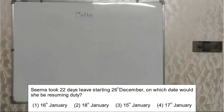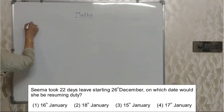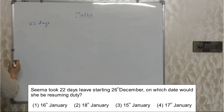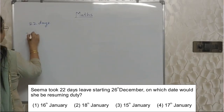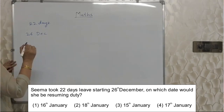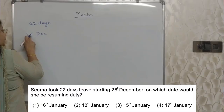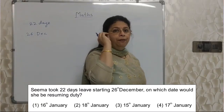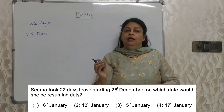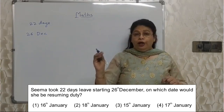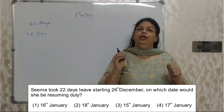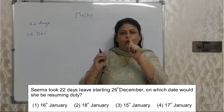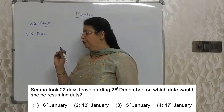Students, read the next sum properly. Sima took 22 days leave starting from 26th December. On which date would she be resuming duty? Total 22 days of vacation or leave, starting from 26th December. Here again, the reading part is very important. Whether the question says 'after 26th,' 'on 26th,' or 'from 26th' — you need to understand that properly, because even a day's difference will change the answer.